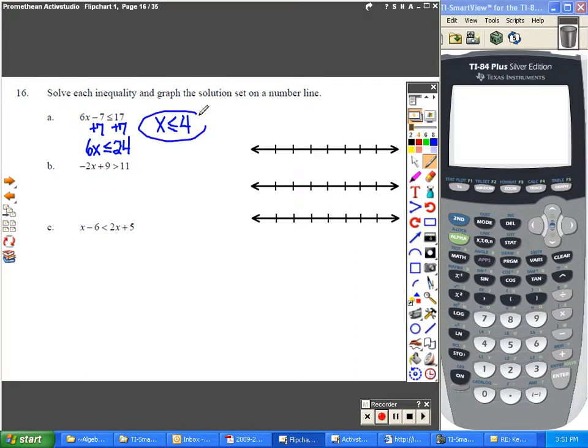Now to actually graph this, you really only need to have a 4, but if you'd like to fill in the rest of the numbers, feel free. To finish this graph, here's what you do. Because it's less than or equal to, I want you to put a solid dot at 4. And then because it's less than, it's going to go towards the smaller numbers.